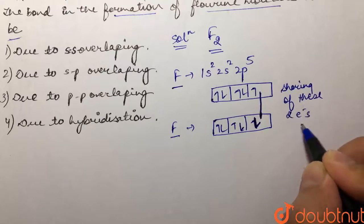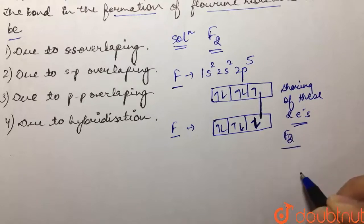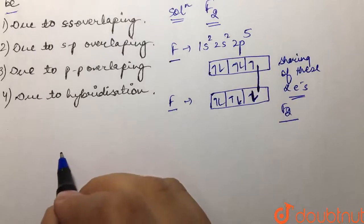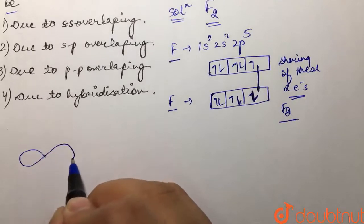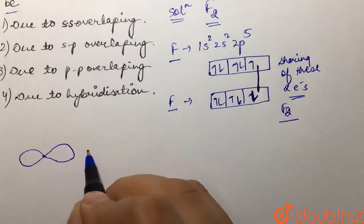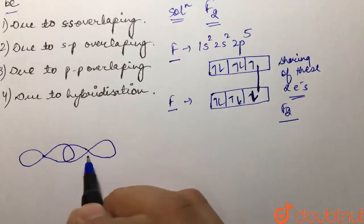How we can see that? We have one p orbital like this and the second p orbital overlapping would be like this. So the two orbitals of the two p...